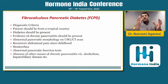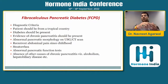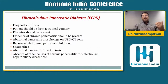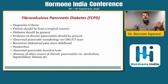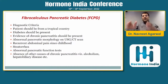Another form seen in young populations is FCPD — fibrocalculous pancreatic diabetes — a secondary form of diabetes. For FCPD, the patient should be from a tropical region, diabetes must be present, there should be evidence of chronic pancreatitis and abnormal pancreatic morphology on ultrasound or CT scan. Patients usually present with rectal abdominal pain and steatorrhea. Abnormal pancreatic functions and absence of other causes of chronic pancreatitis indicate FCPD.